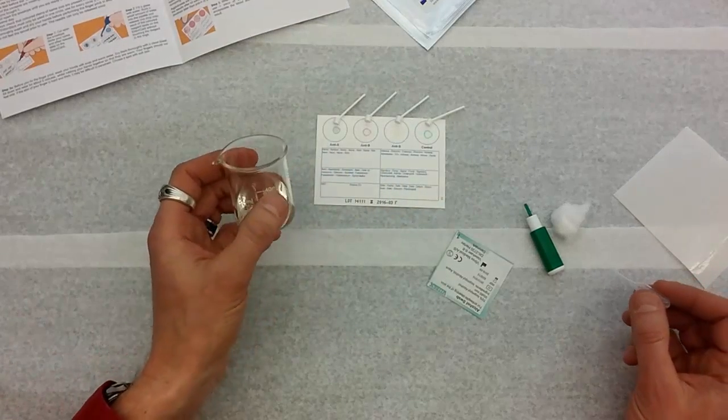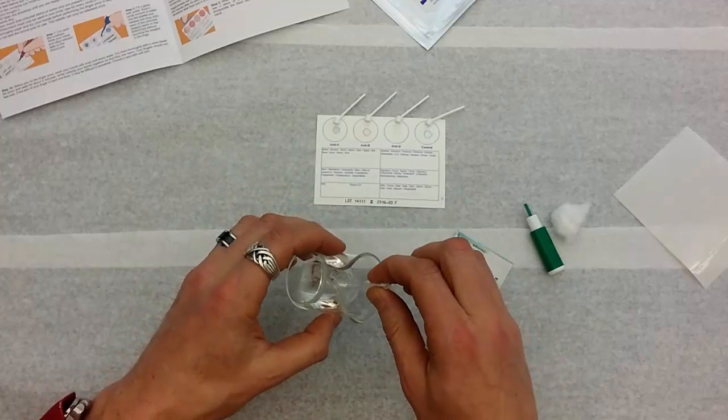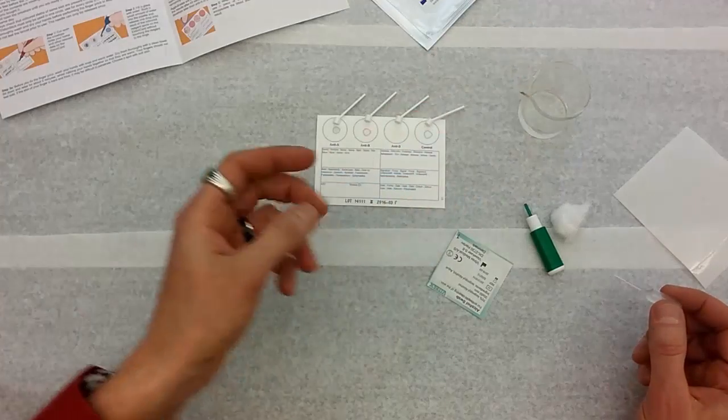There's two things that the kit doesn't come with. One is water. Just a little cup of tap water is fine. And of course the other thing it doesn't come with is your blood, which you'll have to poke your finger to get.